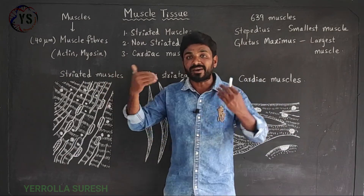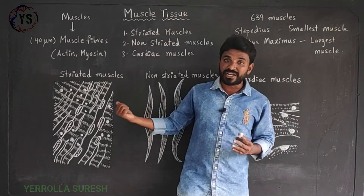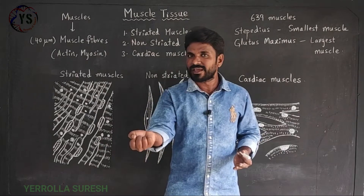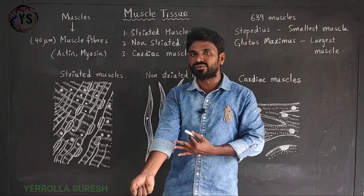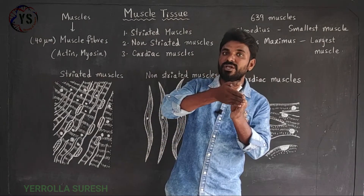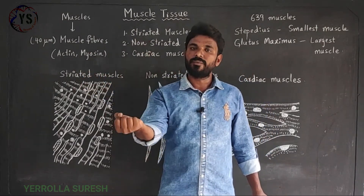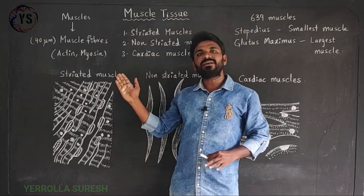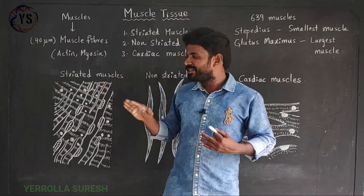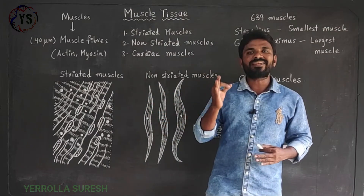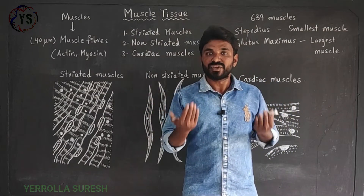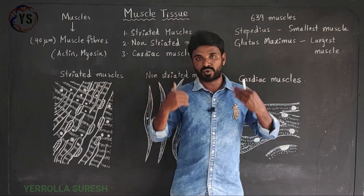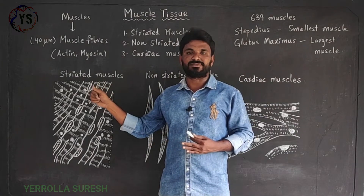The movement of striated muscles is in our control. If we want to move our hands, we can move them because inside the hand there are bones with muscles attached to them, and the hand can be controlled with the help of those muscles. So the movement of striated muscles is in our control, and therefore striated muscles are also called voluntary muscles — we can move them whenever we want.